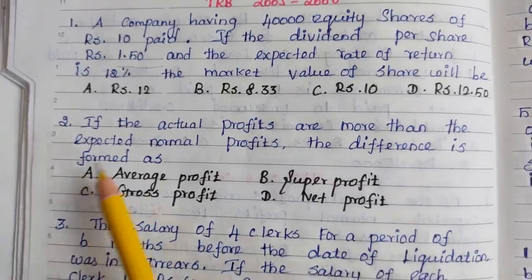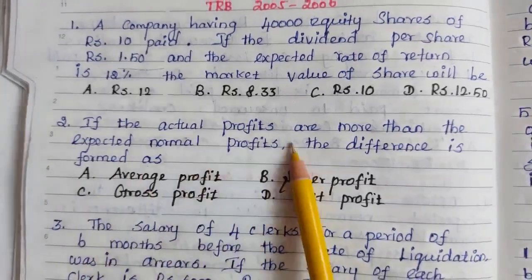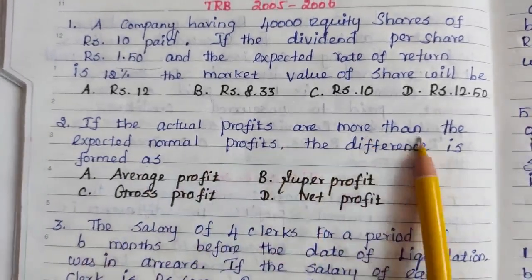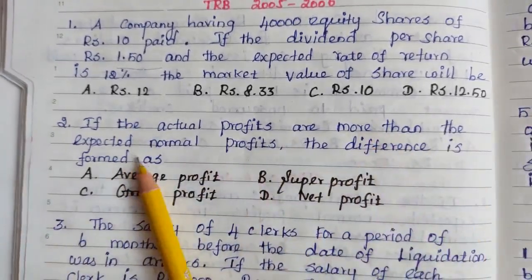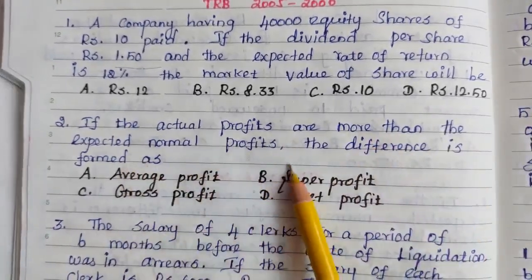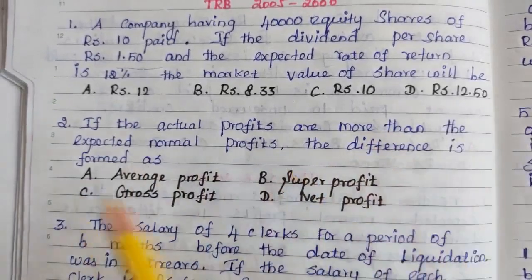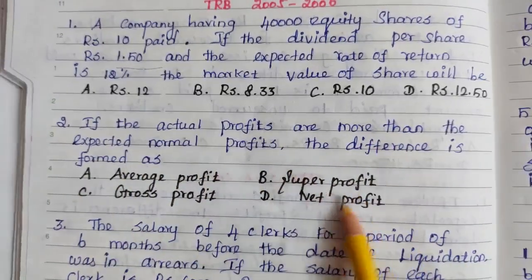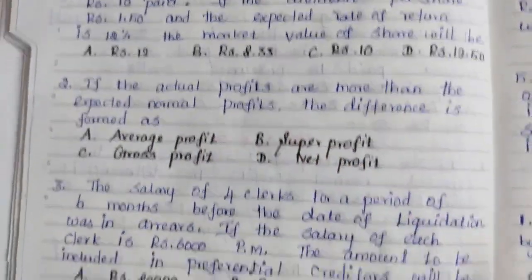If the actual profits are more than the expected normal profit, the difference is called super profit.